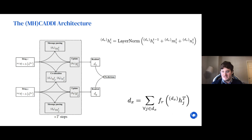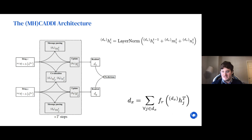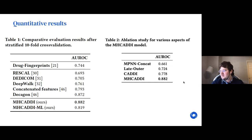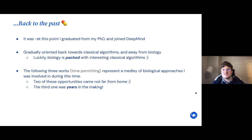Stacking these layers, at every point you have internal message passing within each drug individually but also co-attention allowing the drugs to talk to each other during processing. This gradually updates the node features and from the resulting features of the two drugs you predict whether they'll have an unexpected side effect. Our results placed us as one of the state-of-the-art methods for drug-drug interaction prediction. Ablations showed a huge performance increase from having iterative within-drug and across-drug message passing versus processing each drug in isolation and concatenating — substantially boosting the ROC area. Around this point I graduated from my PhD and joined DeepMind.